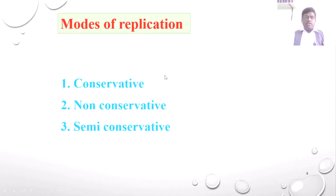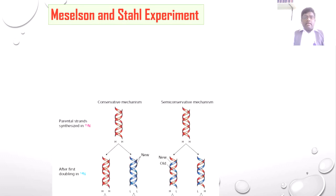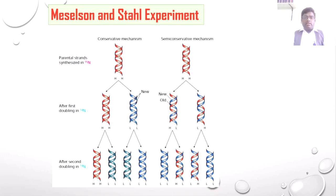There are three different modes of DNA replication: conservative, non-conservative, and semi-conservative. According to Meselson and Stahl, who carried out the experiment, DNA replication always takes place by the semi-conservative mechanism in most cells.